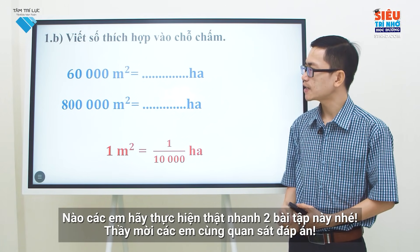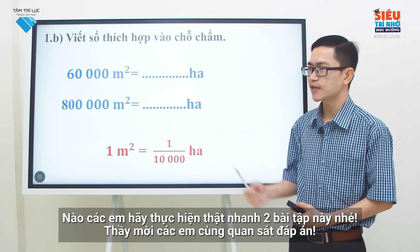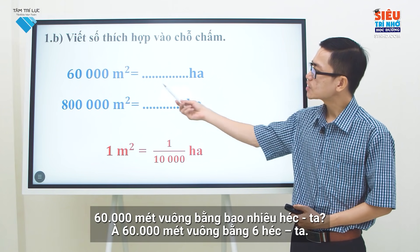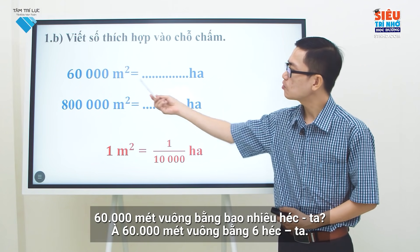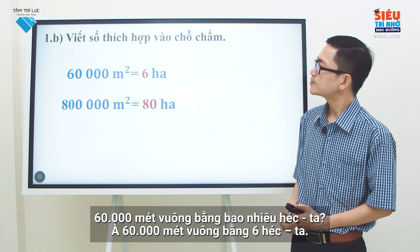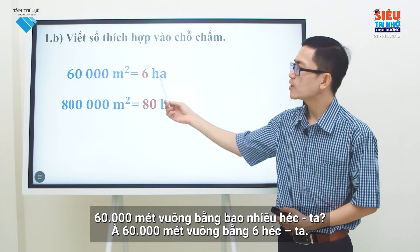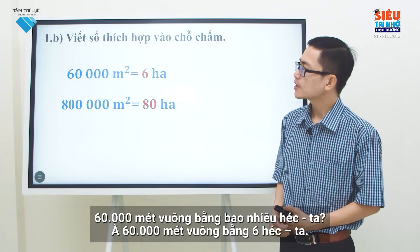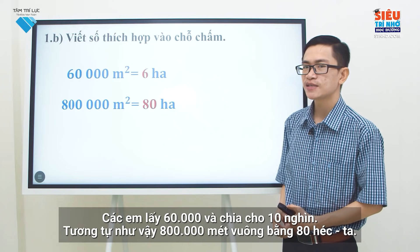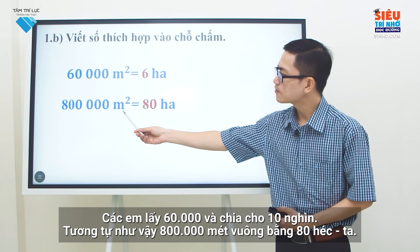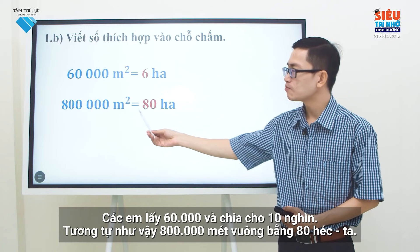Let's quickly solve these two problems. Let's take a look at the answers. 60,000 square meters equals 6 hectares — we divide 60,000 by 10,000. Similarly, 800,000 square meters equals 80 hectares.